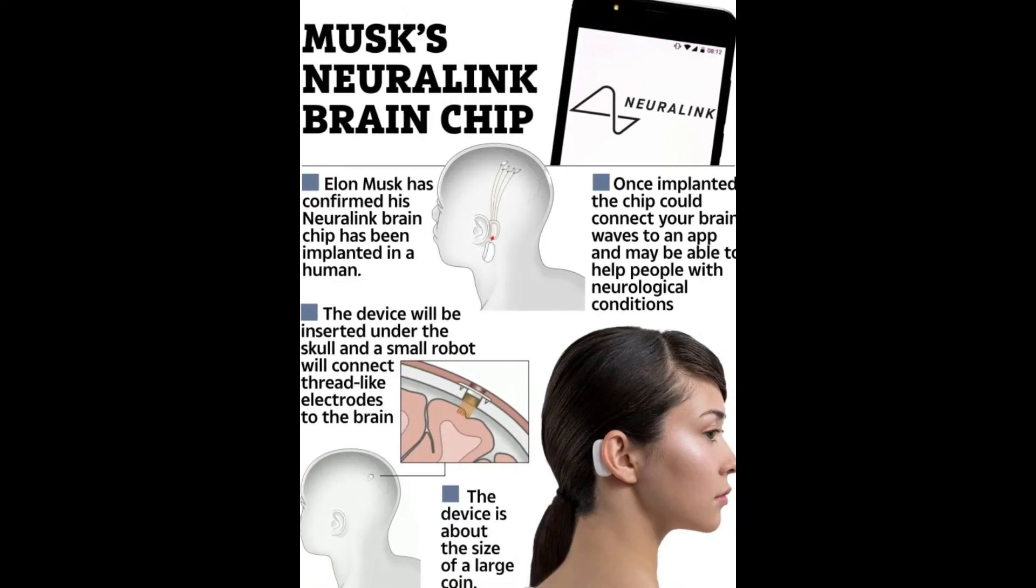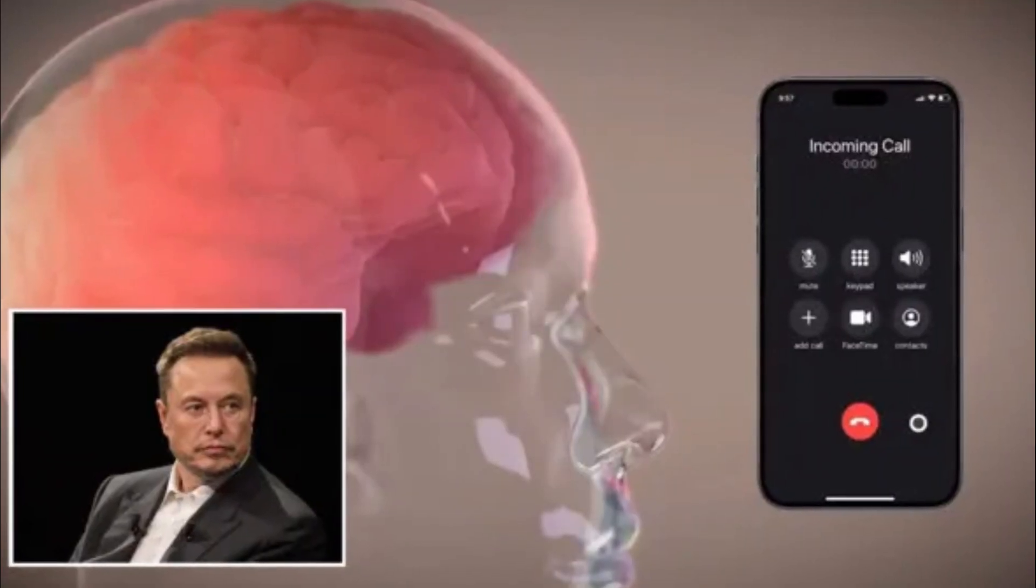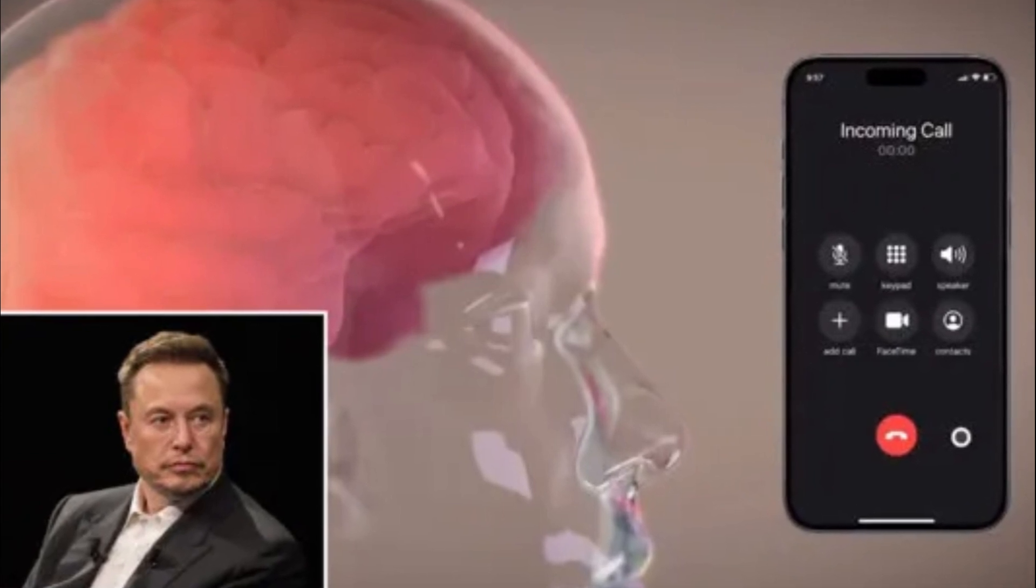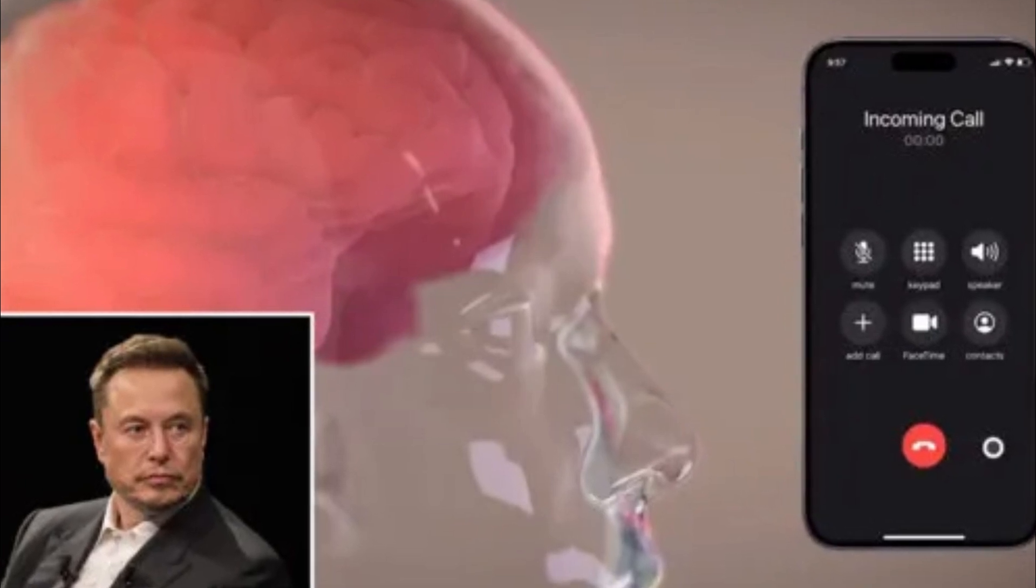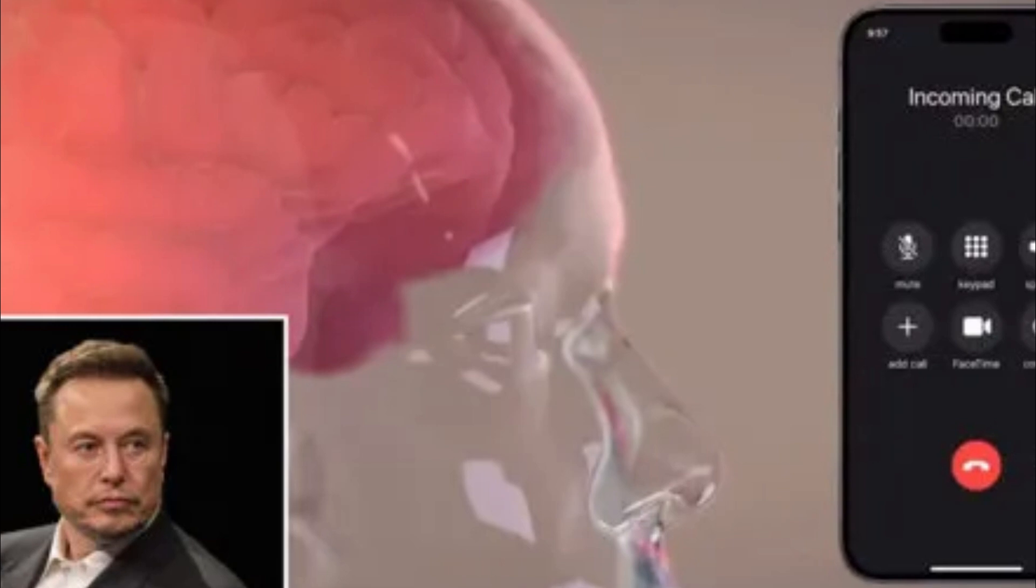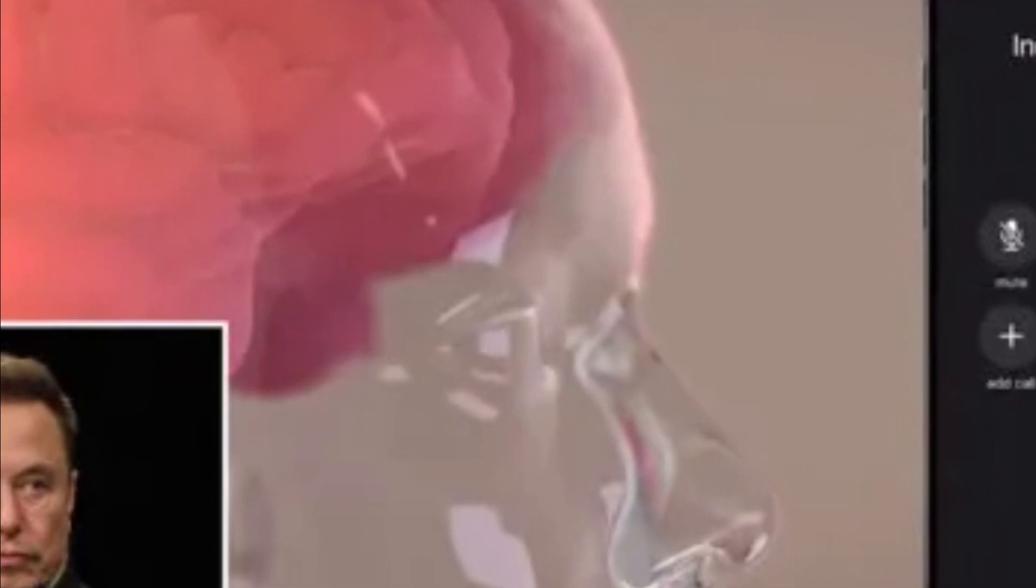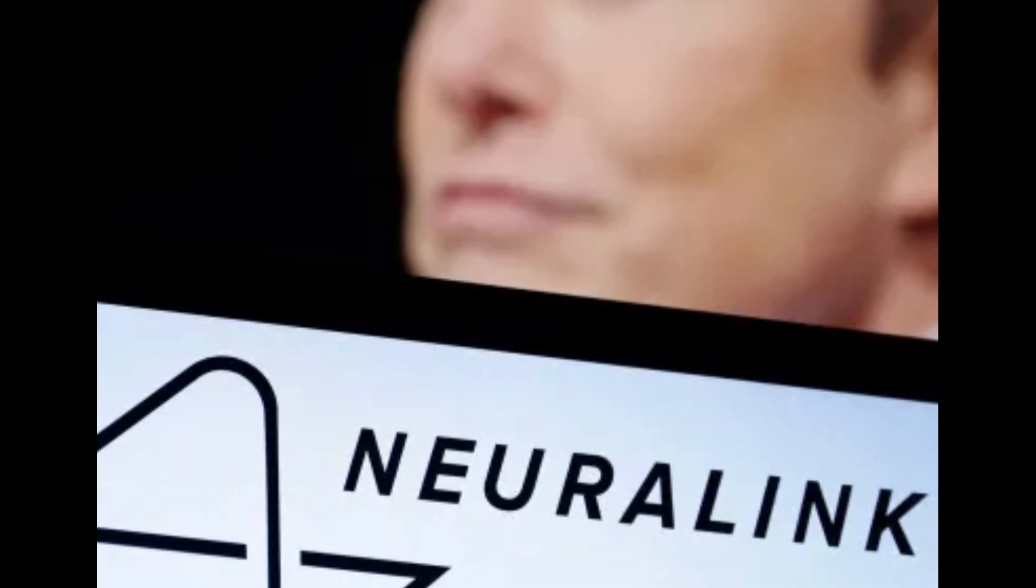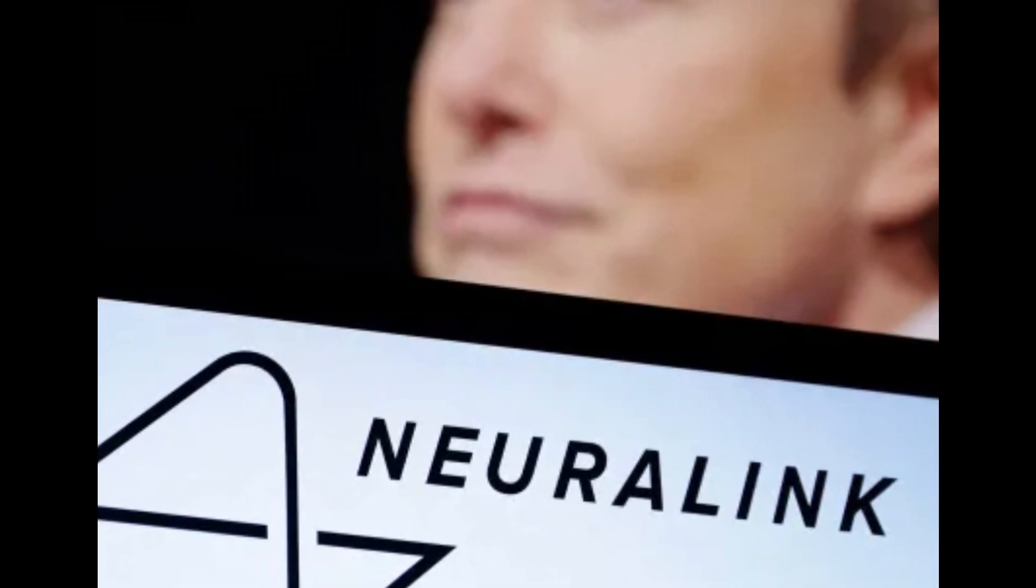The concept of symbiosis, borrowed from biology, envisions two distinct entities coexisting in a way that benefits both. In the context of AI, this translates to a seamless integration where humans leverage the power of AI to enhance their own capabilities, while AI, in turn, learns and evolves through its interaction with the human mind. Neuralink, with its proposed brain-computer interface, presents a potential pathway towards this symbiotic ideal. By directly interfacing with the neural tissue, the chip could theoretically enable us to augment our cognitive abilities. Imagine boosting memory, processing speed, and learning capacity, effectively turning ourselves into walking supercomputers. Control external systems with our thoughts, think of manipulating devices, vehicles, or even virtual environments simply through the power of our minds. Enhance sensory perception, envision receiving and interpreting information beyond the limitations of our natural senses, potentially opening doors to entirely new realms of experience.